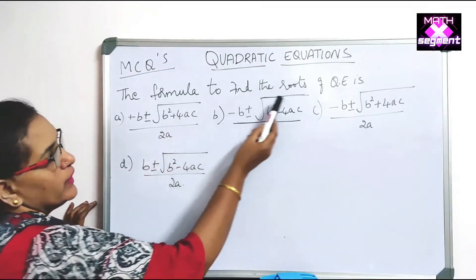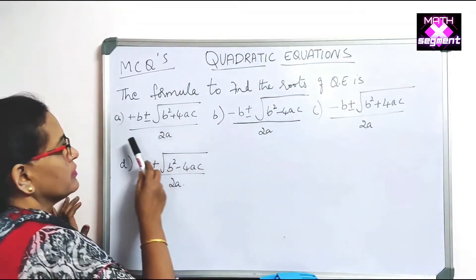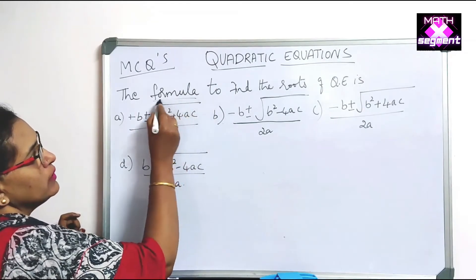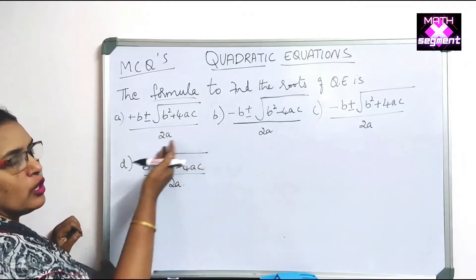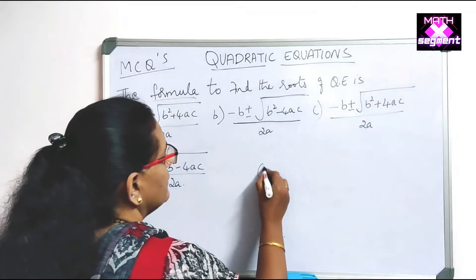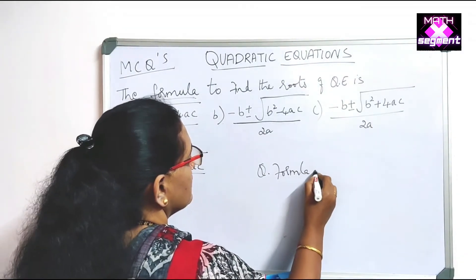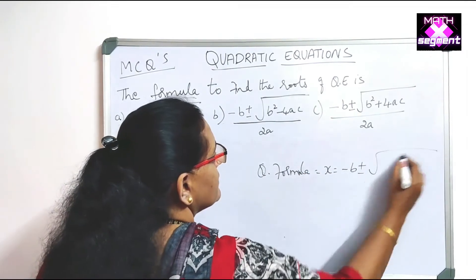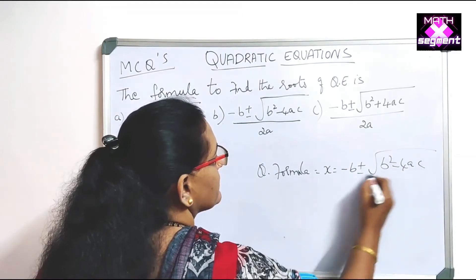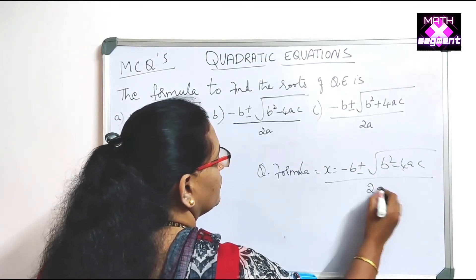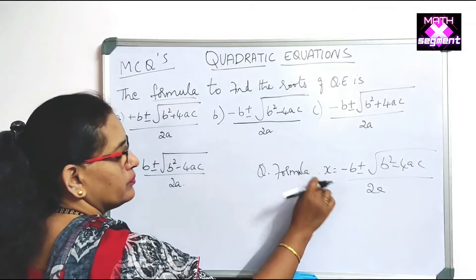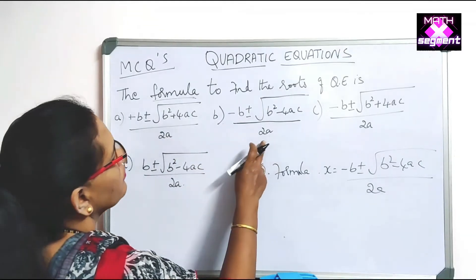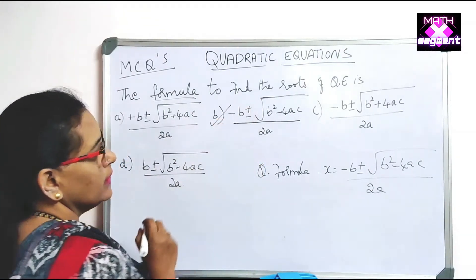MCQ: The formula to find the roots of a quadratic equation is — ? Four formulas are given as options. The quadratic formula we learned is x = (−b ± √(b²−4ac)) / 2a. This is option B, so B is the correct answer.